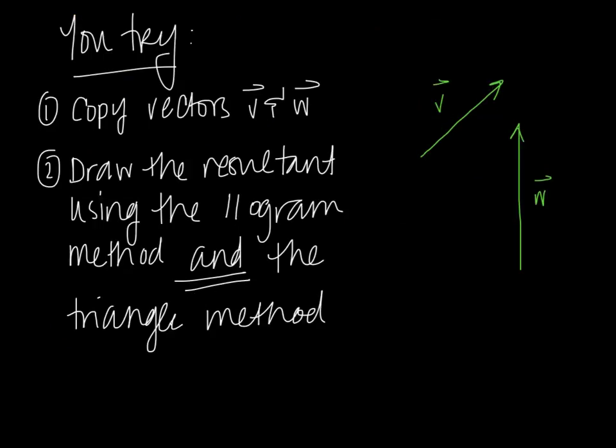What I would like you to do now is try on your own to copy vectors V and W on your own piece of paper. You can just estimate their length and direction the best you can. Then draw the resultant V plus W using both the parallelogram method and the triangle method. You need to show me both methods of copying those vectors down and drawing the resultant.